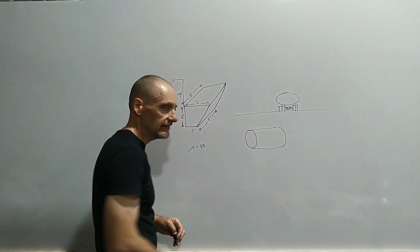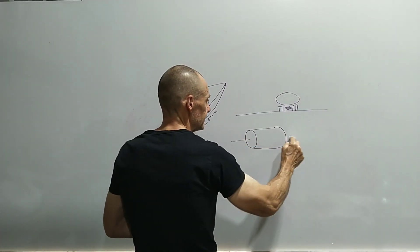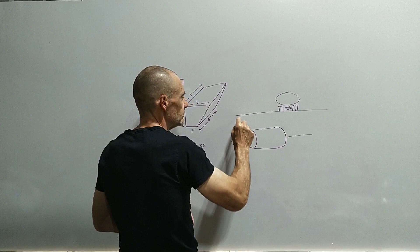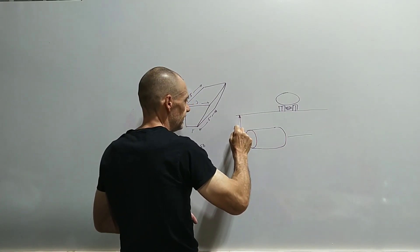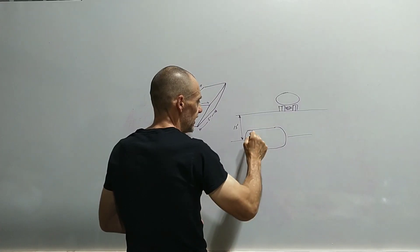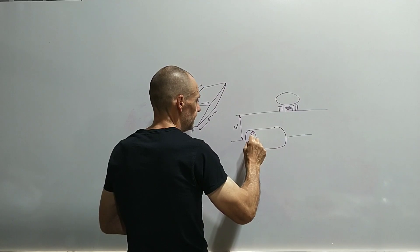But its axis is horizontal underground. So this is the axis. Let's say that this distance is 15 feet, and we'll let the radius of the tank be four feet.